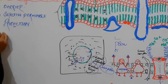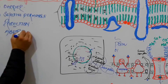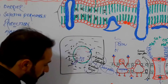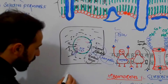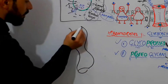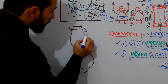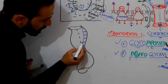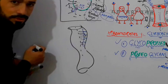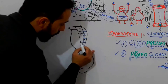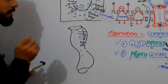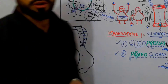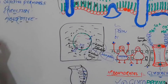The fourth function is the absorptive function. For example, in the inner lining of the small intestine we have epithelial cells, and when food substances come, these cells take up the food substances — this process is called absorption. The cell membrane of these cells is used to absorb all these food substances. Similarly, drugs given to a patient are absorbed through these cell membranes. So the cell membrane plays an important role in absorption of different substances.